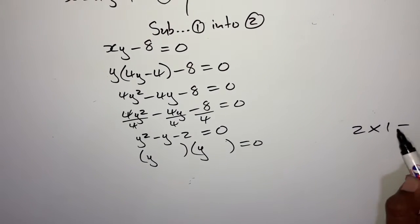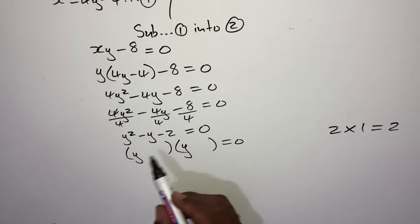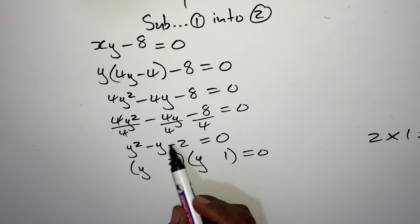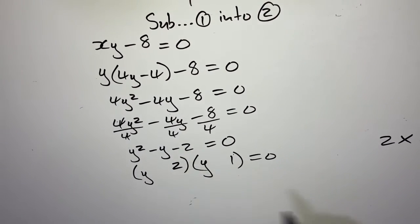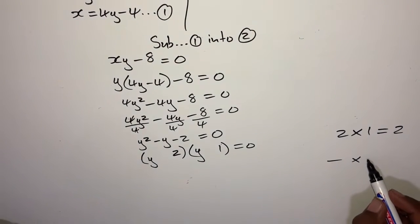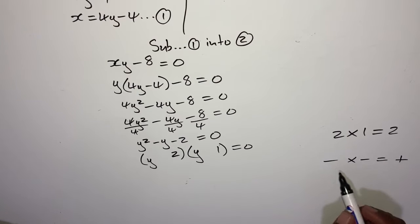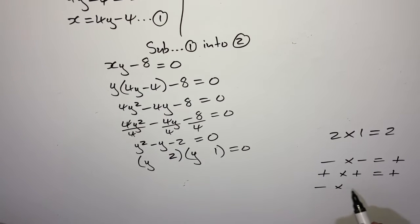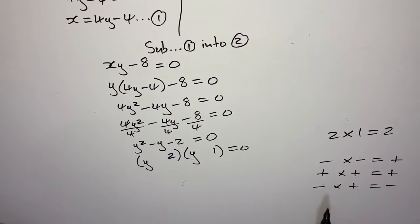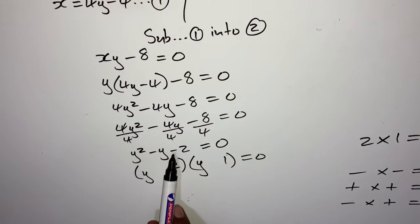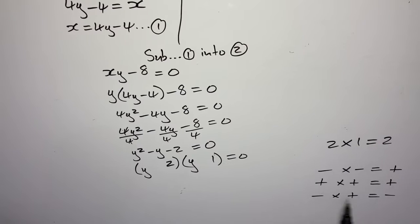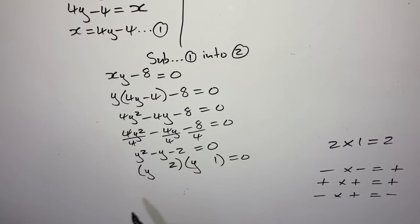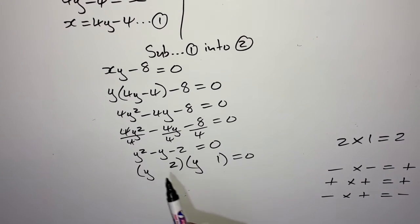Equation 2 is: x squared minus x minus 10 minus y equals 0. I must substitute equation 1 into equation 2. Equation 1 says x = y plus 2. Where I see x, I put y plus 2. So: (y plus 2) squared minus (y plus 2) minus 10 minus y equals 0. We did this so that we can have only one unknown in our equation.